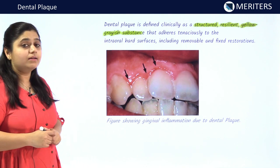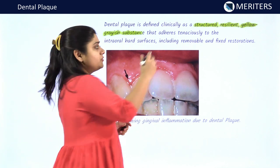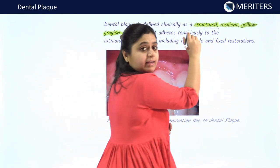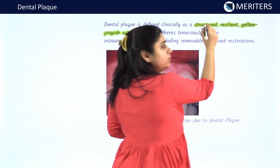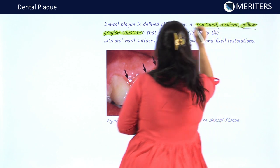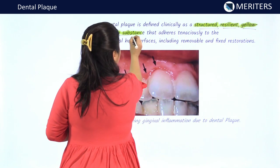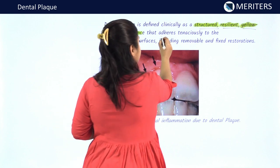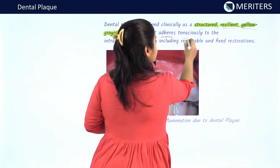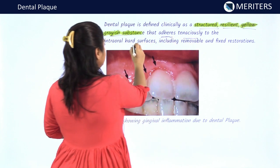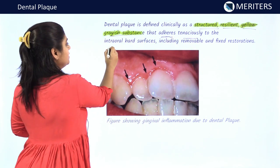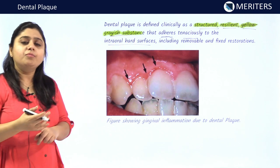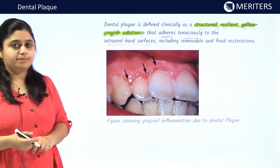Dental plaque is clinically defined as a structured, resilient yellowish-grey substance that adheres tenaciously to the dental intraoral hard surfaces, including removable and fixed prosthesis.